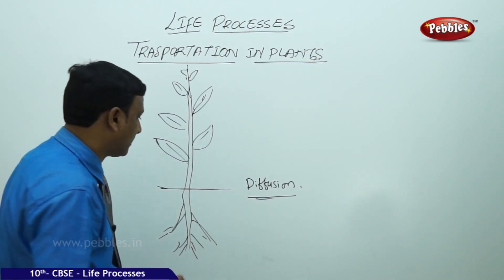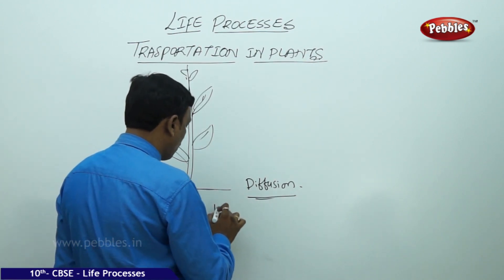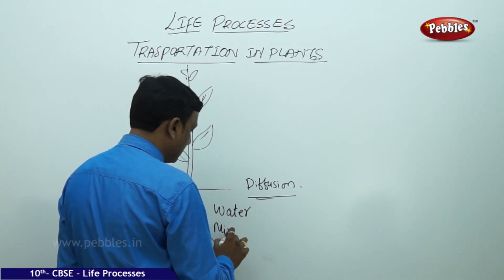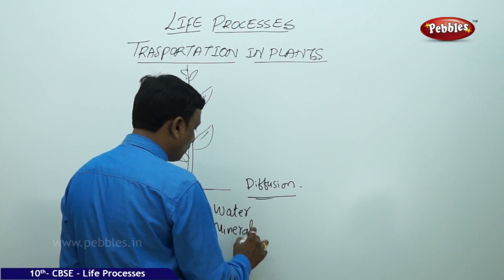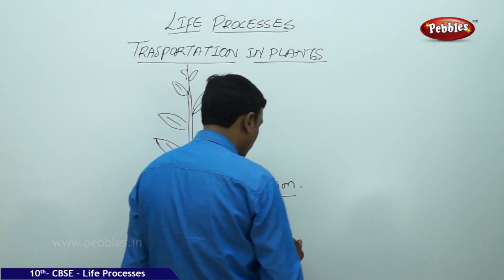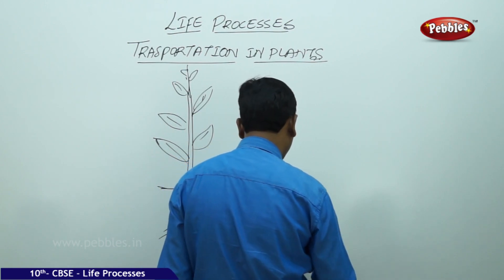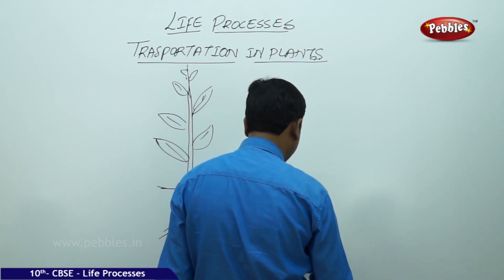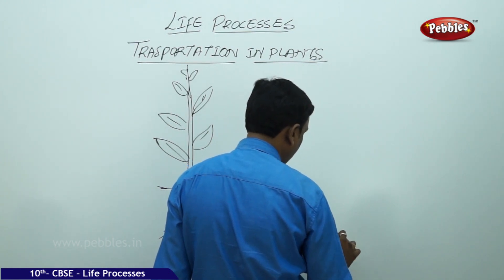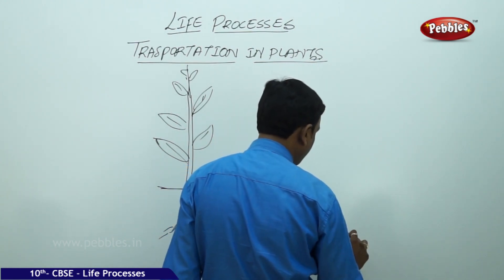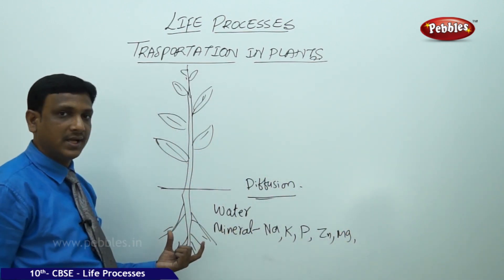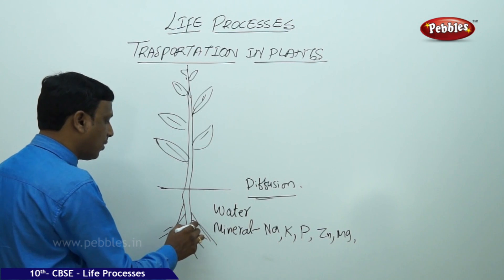What are the basic materials transported in plants? Water is the major one. Along with water, minerals are needed for the growth of the plant — minerals like sodium, potassium, phosphorus, zinc, magnesium, and many others. These minerals are absorbed along with the water.